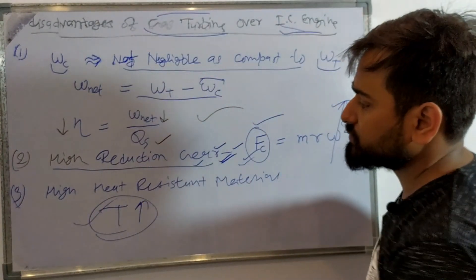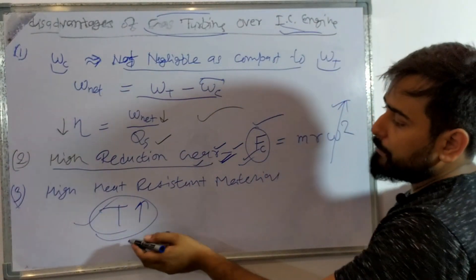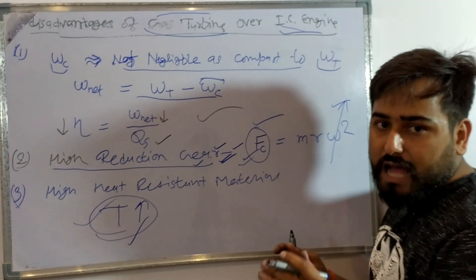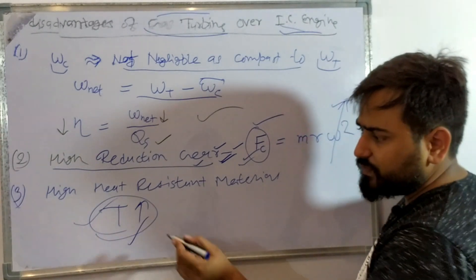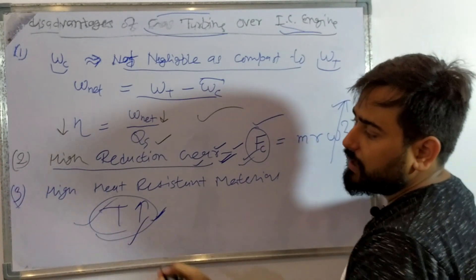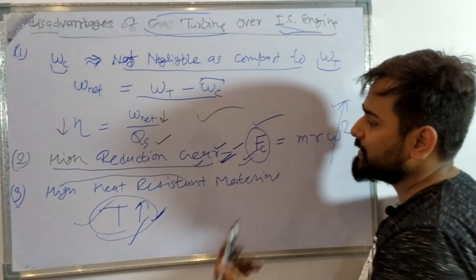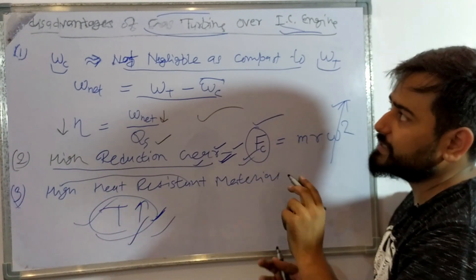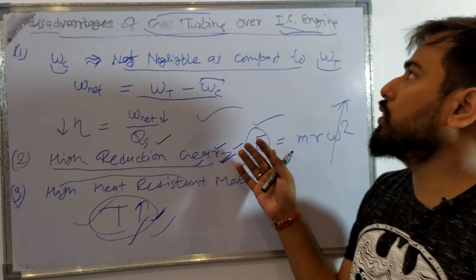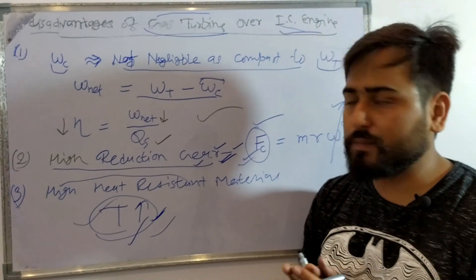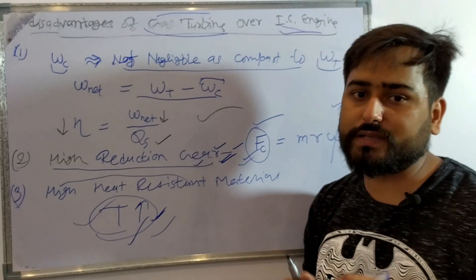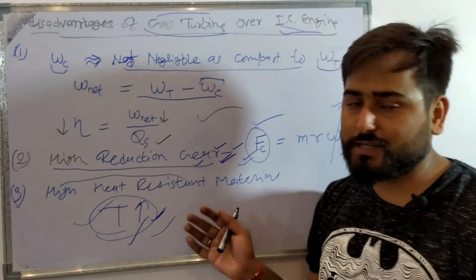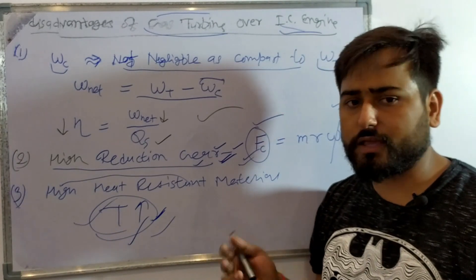Because the temperature is higher and we are working at higher temperatures, whatever materials are used must be high heat-resistant materials. These are costly and can degrade under extreme conditions. So these are the disadvantages of Gas Turbine. This was our introduction to Power Plant Engineering. We will fully enter the Gas Turbine topic in the next lecture. Thank you.